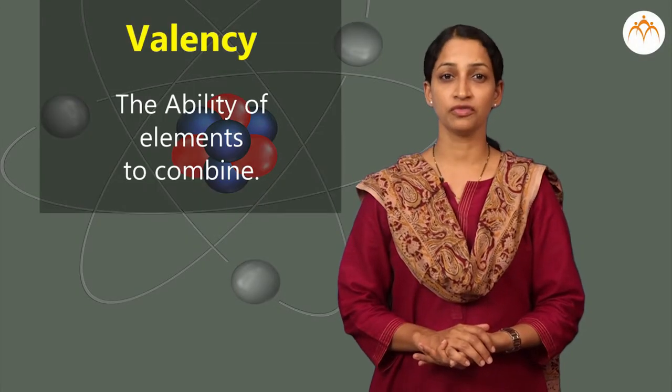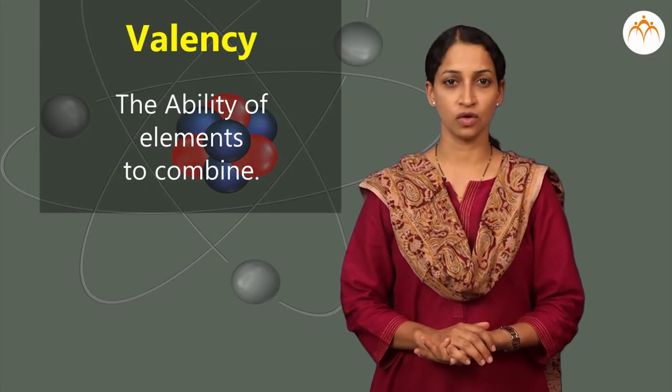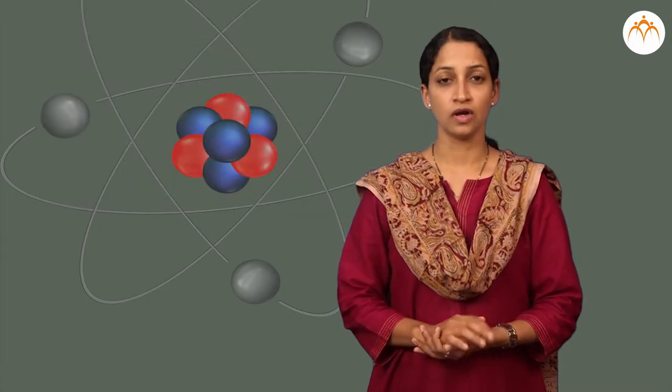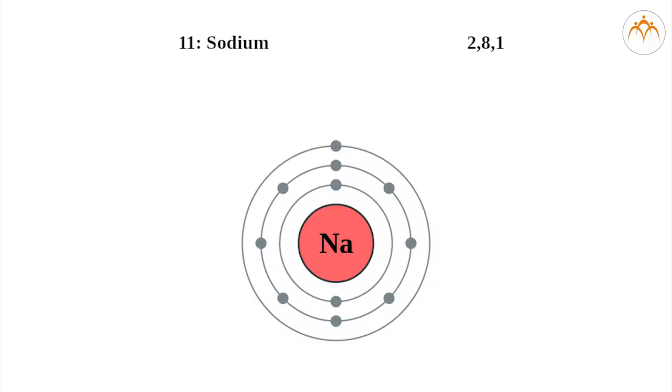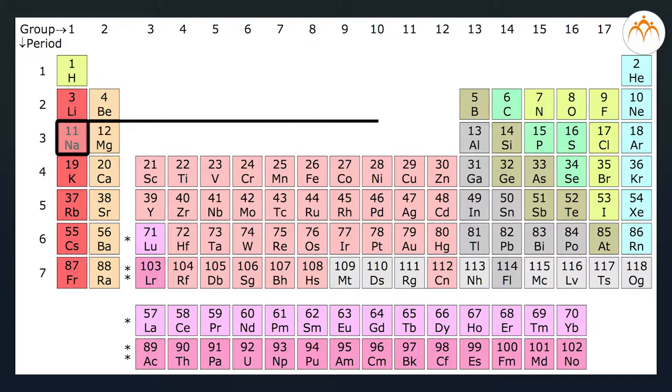The ability of elements to combine is called valency. A sodium atom (Na) has electron configuration 2,8,1. If its outermost shell has 8 electrons, it gets the configuration of the noble gas neon. That means it stabilizes.